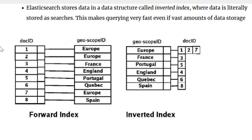Elasticsearch uses a data structure called inverted index. For example, suppose you have eight documents with a geoscope ID attribute. If you want to search for 'Europe,' rather than scanning all documents, Elasticsearch stores data as search — it records that Europe is present in documents 1, 2, and 7, France is present in certain documents. So when a search query comes in asking for 'Europe,' it can answer instantaneously.